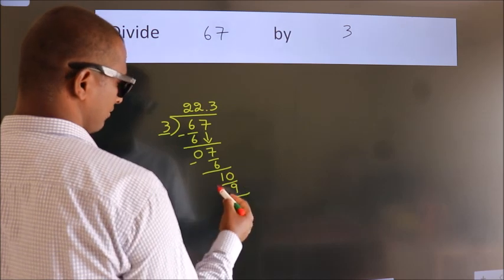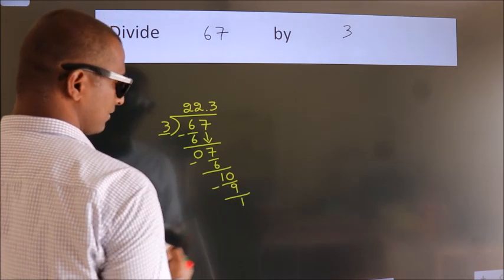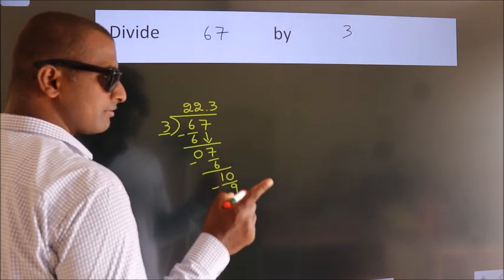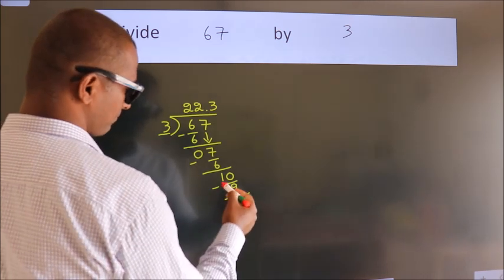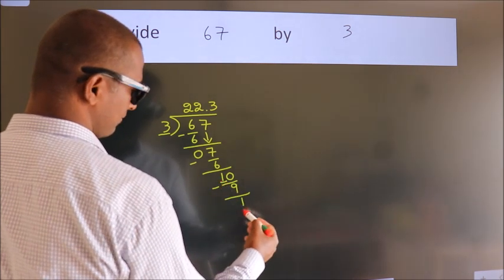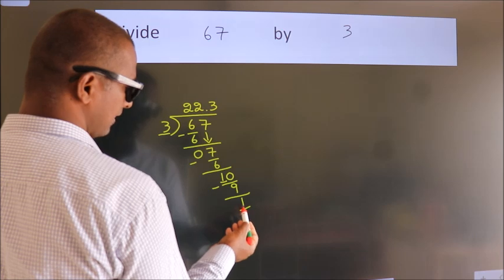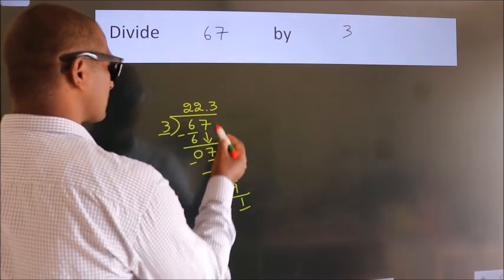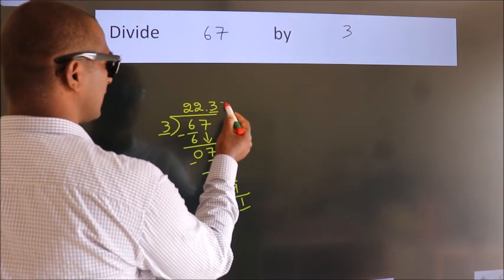Now, we subtract, we get 1. Now, you observe, we had 1 here and we got 1 again. That means, this number keep on repeating.